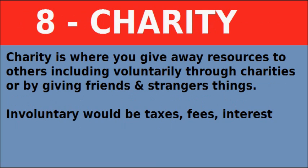Number eight is charity — where you give away resources to others, either voluntarily through charities or by giving friends and strangers things. For example, donating fiat currency to a cancer foundation or the Humane Society, or baking pies and giving someone a pie — that's giving away your portion of food for somebody else. Now, involuntary charity would be things like taxes, useless fees, and interest. With income tax, you really don't have much of a say. With sales tax, you could refuse to pay, but then they'll refuse to sell you the item. For fees, it depends — an internet fee would not go towards charity.